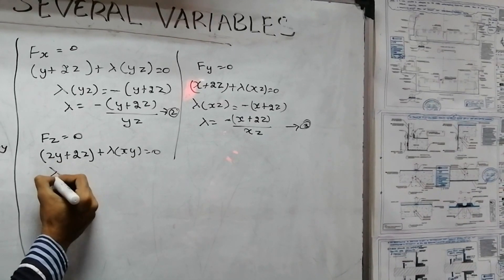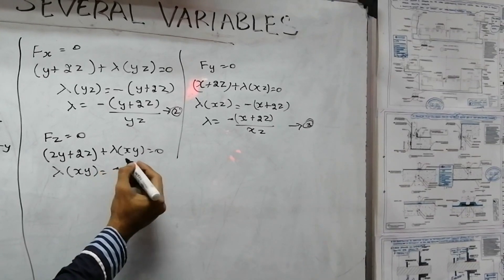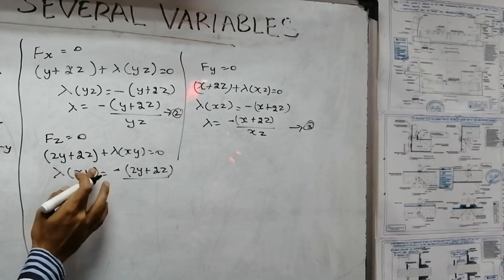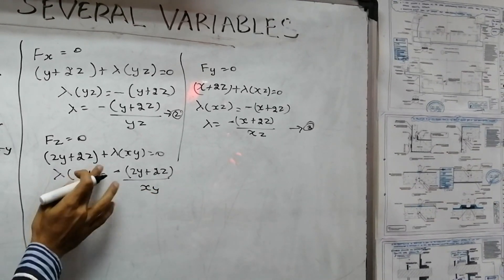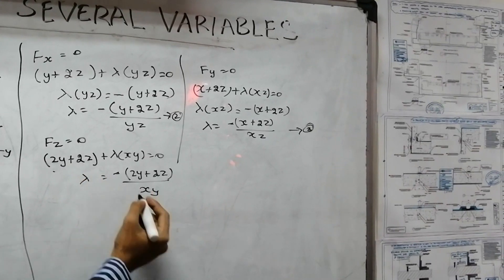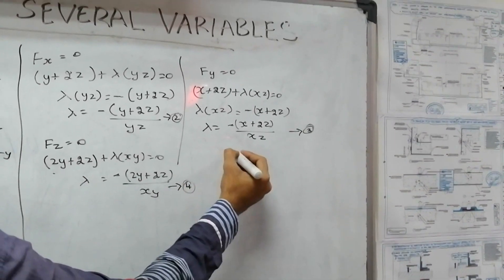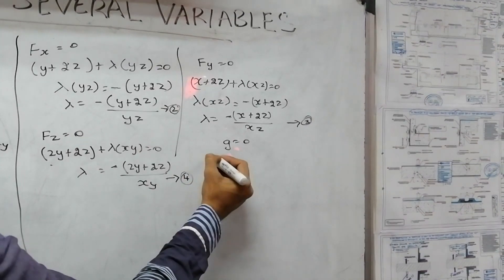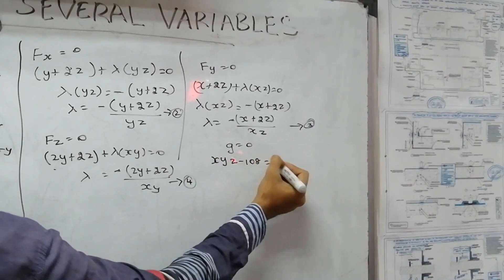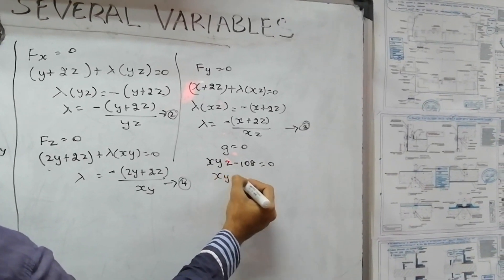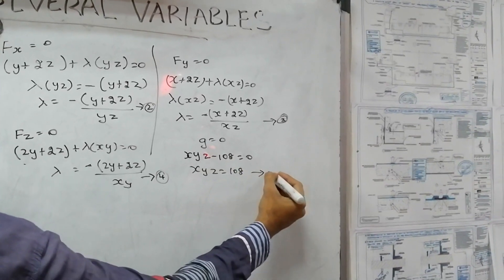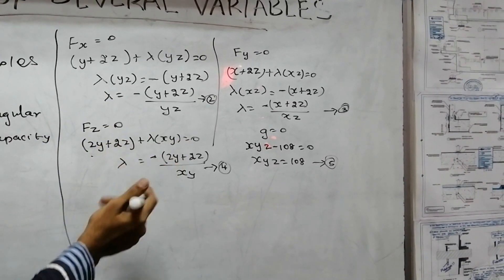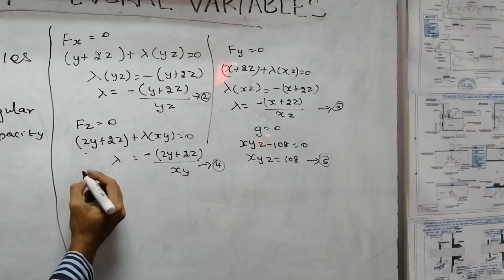F of z equals 0 gives us: 2y plus 2x plus lambda(xy) equals 0. Lambda equals minus(2y plus 2x) divided by xy. That is equation 4. From the constraint equation 5: xyz equals 108.